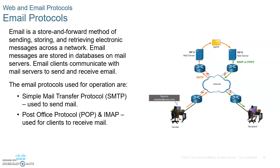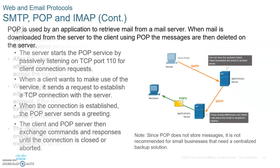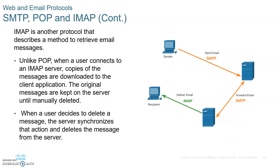What's the difference between POP and IMAP? With POP, when you retrieve the data, the data is erased from the server — it's gone. But with IMAP, they give you a copy of it and keep a copy on the server. So that's SMTP, POP, and IMAP.